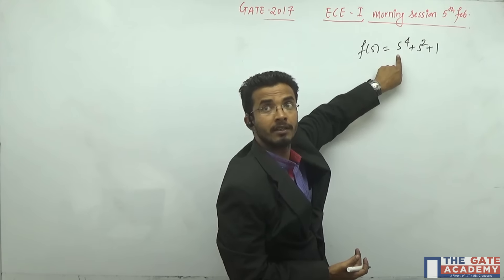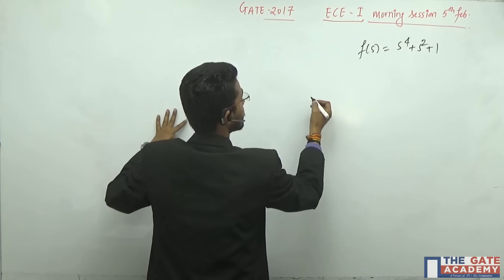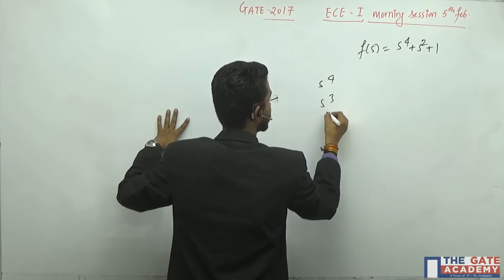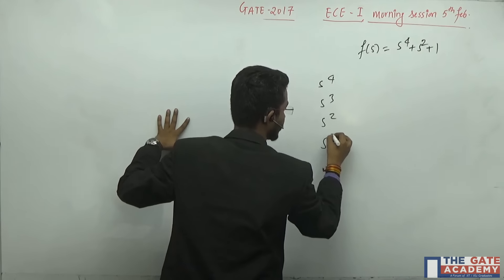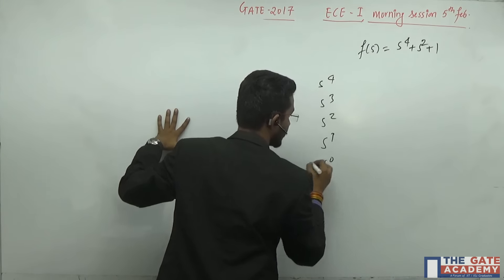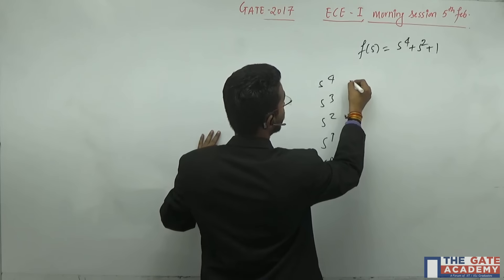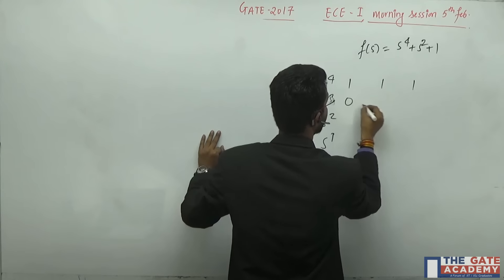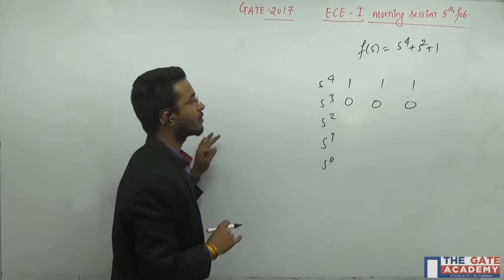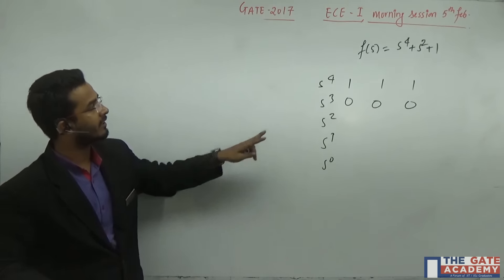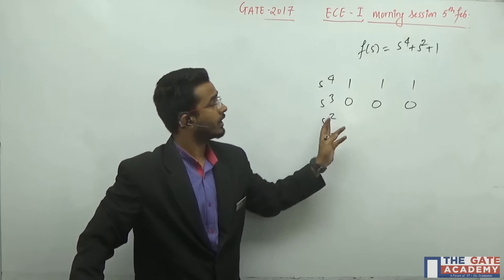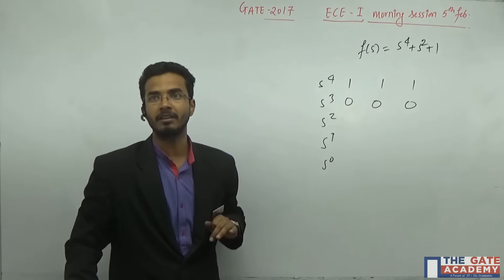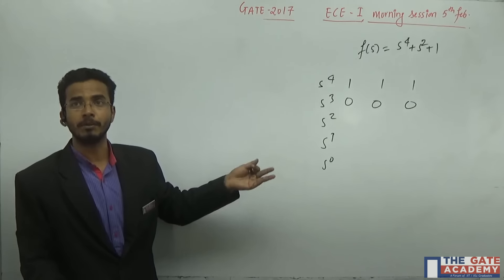We can draw the Routh array for this: s raised to 3, s raised to 2, s raised to 1, s raised to 0. We will start from here: 1, 1, 1, 0, 0, 0. All the even terms are represented here: 4, 2, 0 and all the odd terms are missing. Here we are getting the first type of discontinuity in my table, the problem.